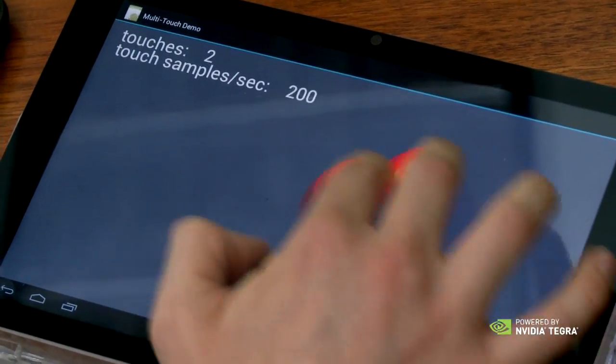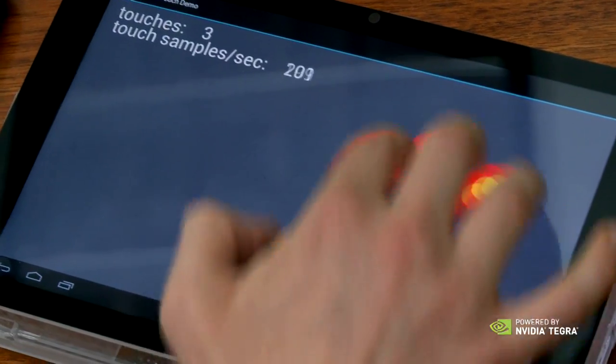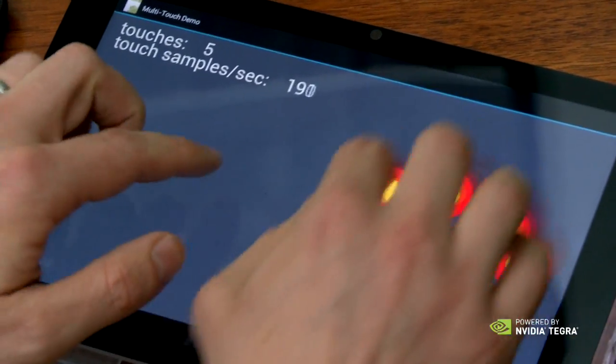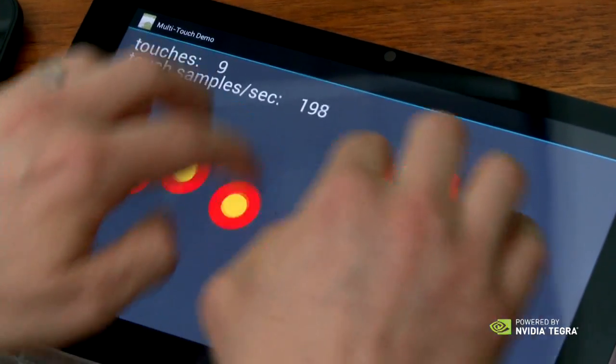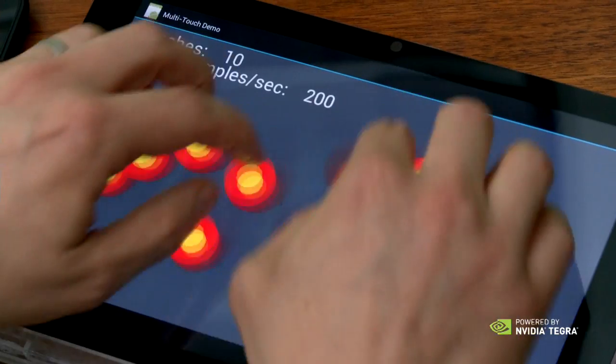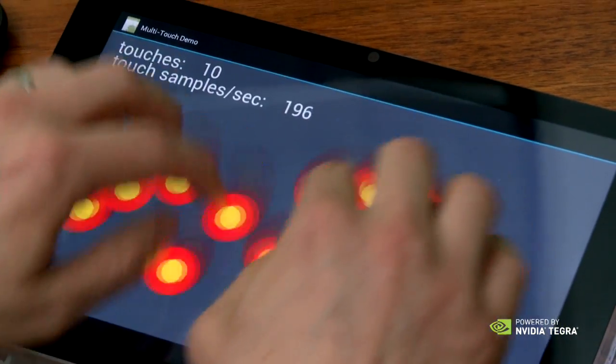So as we go to 2, it really stays steady. 2 fingers, 3 fingers, 4, 5, 6, 7, 8, 9—and we're actually jumping down here, but it'll go back up because as I move faster, we'll go to about 200 touches per second.